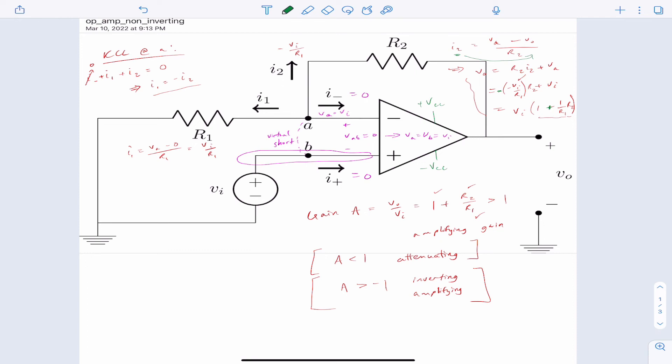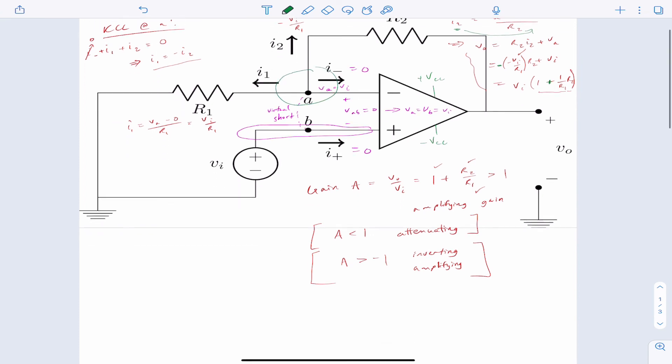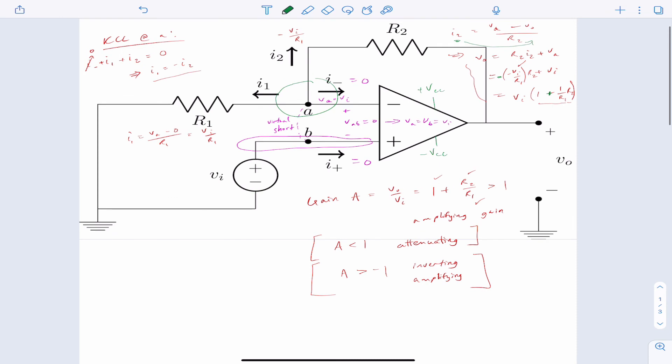You could do this binodal analysis, and that might make it nicer and easier. So let me show you that really quick. So what I would want to do is analysis at node A, because that's where all the interesting stuff is going on with the currents.